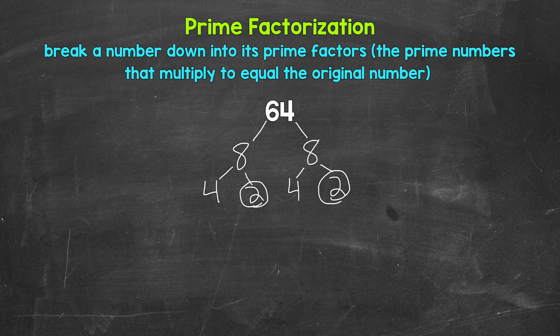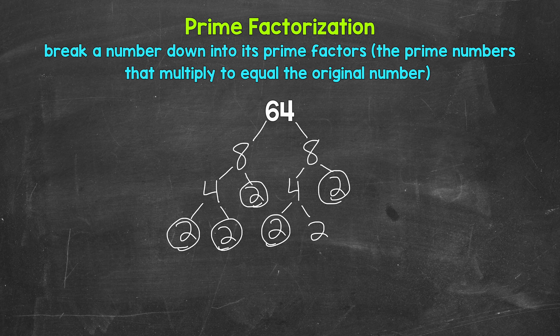4 is a composite number, so we can break those 4s down. We know that 2 times 2 equals 4, and 2 is a factor of 4, so let's break the 4s down into 2s. And again, 2 is a prime number, so we are done. We have all prime numbers now, so we are done.